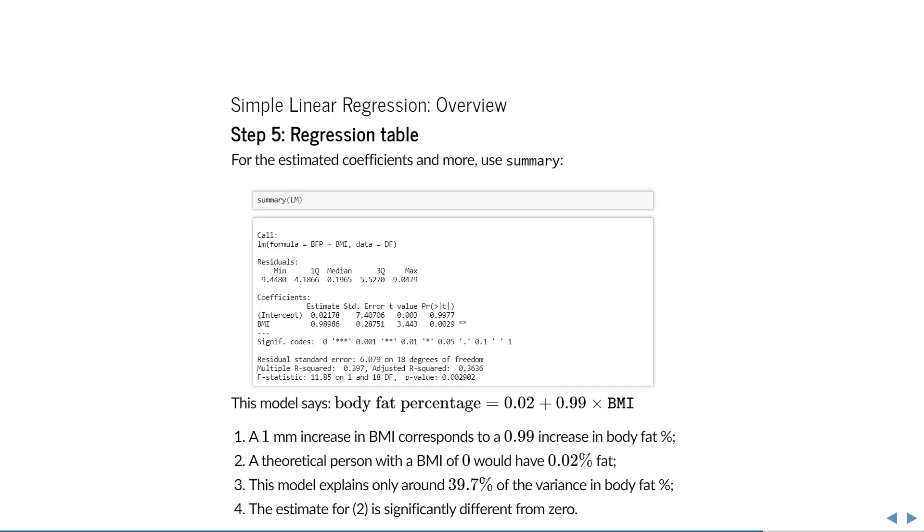And then we can go back to the original research question. Can we use BMI in place of body fat percentage? BMI explained only 39.7% of the variance in body fat percentage in these 20 individuals, so we can conclude that BMI alone probably isn't going to be a great substitute for measurements of body fat percentage.